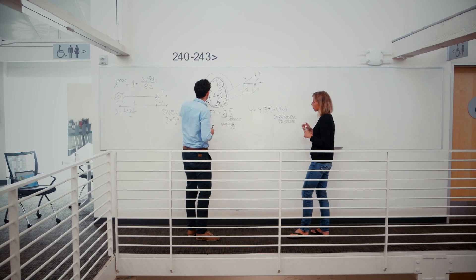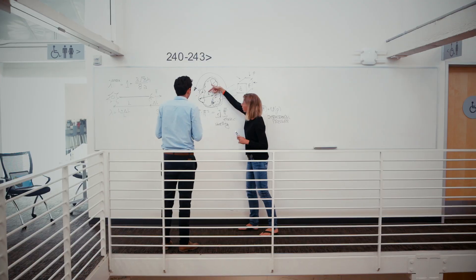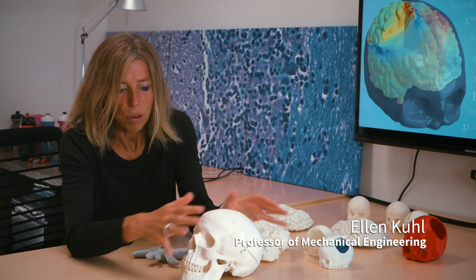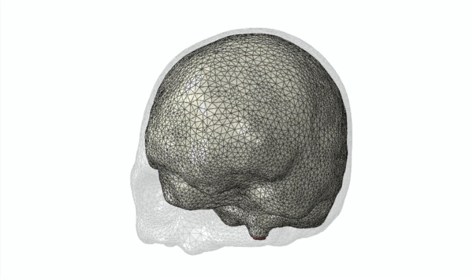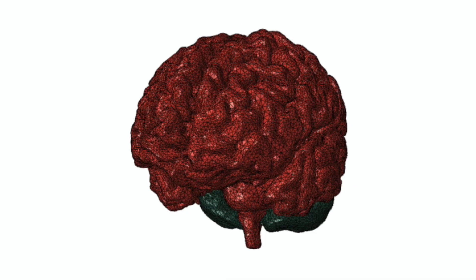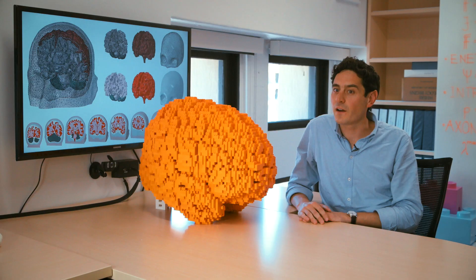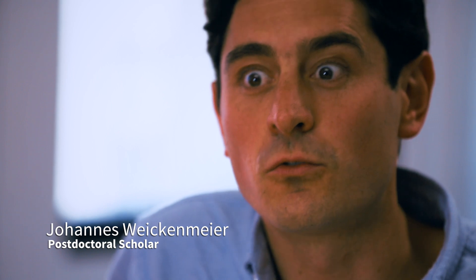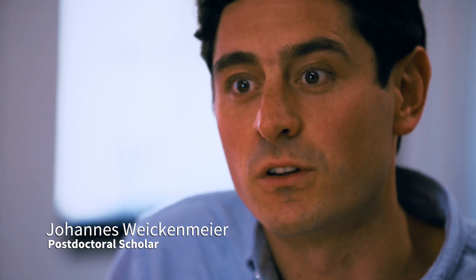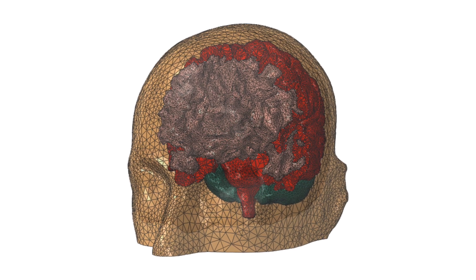Stanford University. A very complex structure like the head or the brain is very difficult to describe with just a single equation. The way we do it is we chop it into geometrically simple structures — bricks, tetrahedrals, triangles. The finite element method allows us to reconstruct the true geometry of any structure that we want to study.